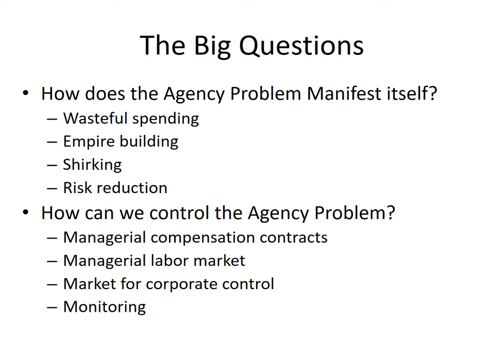These are the things we see generally as a result of the agency problem, though they are not the only problems. The next big question is: how can we control the agency problem? Our first go-to is the managerial compensation contract. We want to design the compensation contract so that managers only get rich when shareholders get rich. There's also the managerial labor market. People typically don't think of CEOs as labor, but they are.